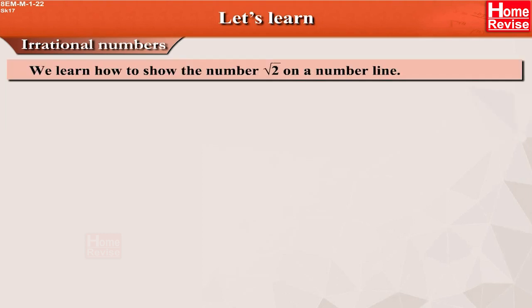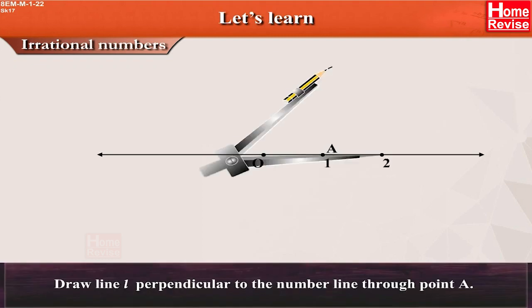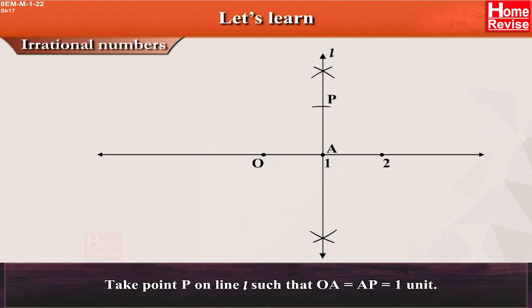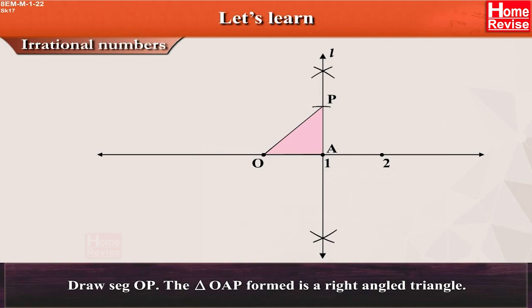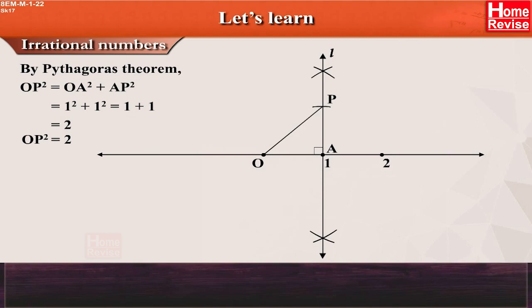We learn how to show the number root 2 on a number line. On a number line, the point A shows the number 1. Draw line L perpendicular to the number line through point A. Take point P on line L such that OA is equal to AP is equal to 1 unit. Draw segment OP. The triangle OAP formed is a right-angled triangle. By Pythagoras theorem, OP² = OA² + AP² = 1² + 1² = 1 + 1 = 2. Therefore, OP is equal to root 2.